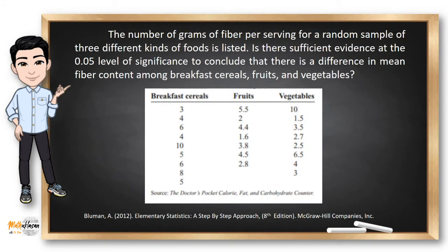Let's have an example. The number of grams of fiber per serving for a random sample of three different kinds of foods is listed. Is there sufficient evidence at a 0.05 level of significance to conclude that there is a difference in mean fiber content among breakfast cereals, fruits, and vegetables? In this example, we can see that we have three independent groups. We have samples for breakfast cereals, fruits, and vegetables. Six here means that it has six grams of fiber per serving.